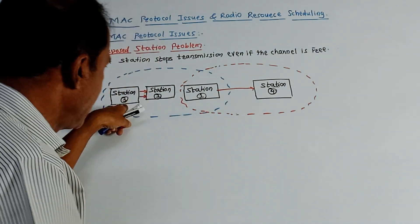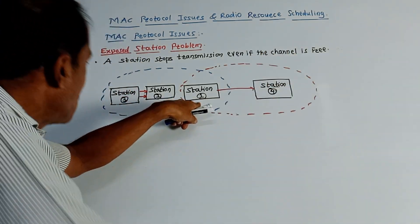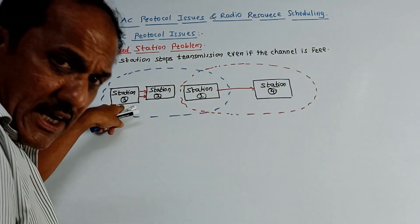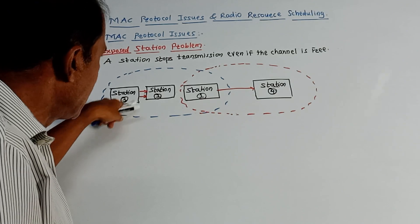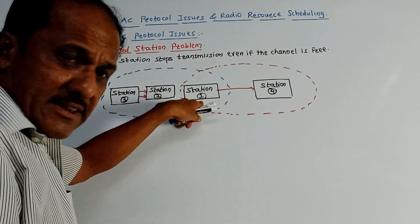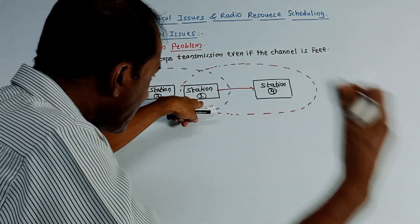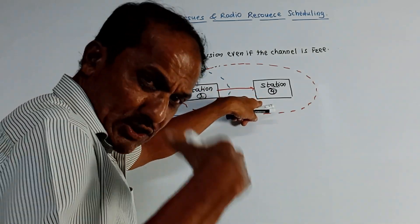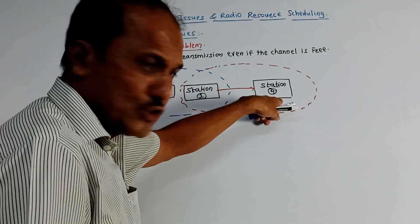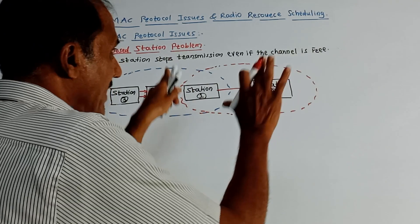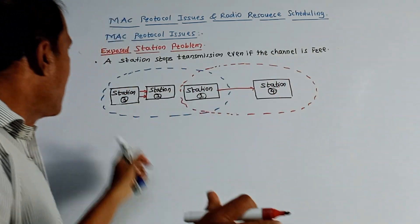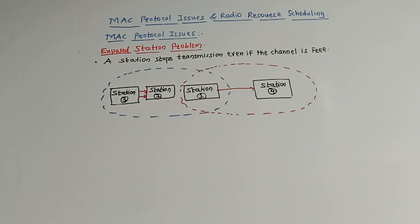We can say technically like this: station 1 listens to this transmission which is going on from station 3 to station 2, and this station 1 stops transmitting data or will not start transmitting data to station 4 even if the channel is free, channel is available. This is called exposed station problem.